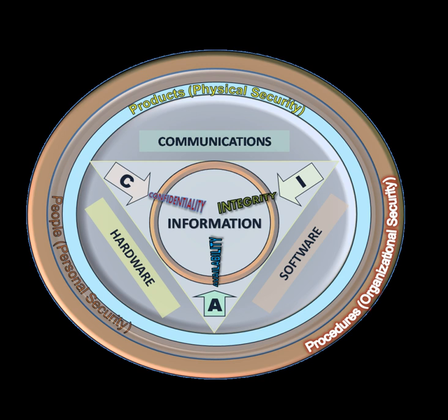The type of information security classification labels selected will depend on the nature of the organization. In the business sector, labels such as public, sensitive, private, and confidential are used. In the government sector, labels such as unclassified, unofficial, protected, confidential, secret, top-secret and their non-English equivalents are used. In cross-sectoral formations, the Traffic Light Protocol, which consists of white, green, amber, and red, is used. All employees in the organization, as well as business partners, must be trained on the classification schema. The classification of a particular information asset should be reviewed periodically to ensure the classification is still appropriate and to ensure the security controls required are in place.